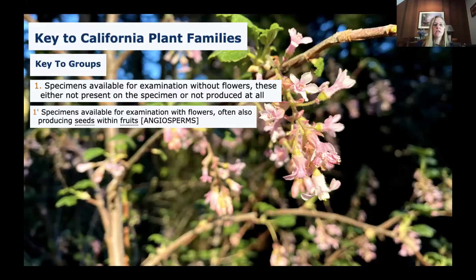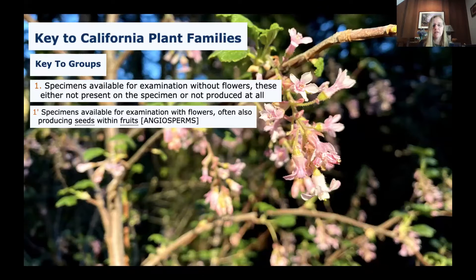The first couplet asks: specimens available for examination without flowers — either not present on the specimen or not produced at all — or specimens available for examination with flowers, often also producing seeds within fruits, angiosperms. In this case, we do have a flowering specimen, which is indeed an angiosperm.